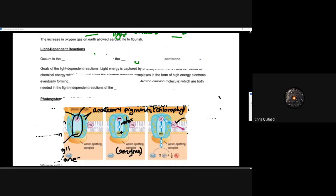When looking at light-dependent reactions, we need to remember that those light-dependent reactions are going to occur in the chloroplast, specifically on that thylakoid membrane that we looked at this morning. That thylakoid membrane holds all of those light-capturing and light-harnessing molecules and structures that allow for a plant to take that light energy and convert it into sugar and oxygen.